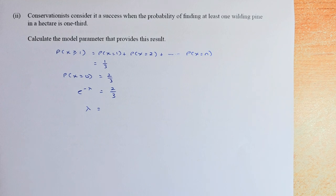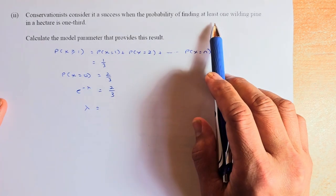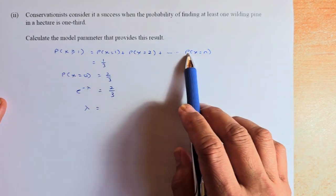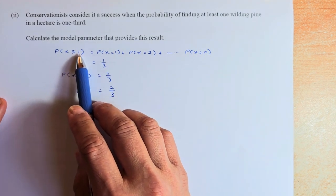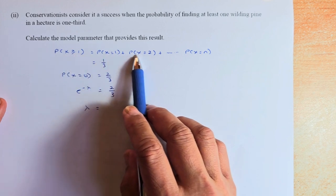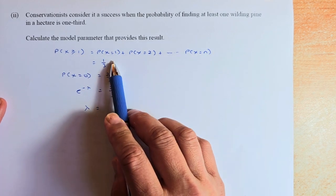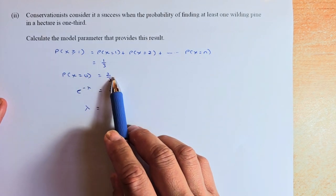Conservationists consider it a success when the probability of finding at least one wilding pine in a hectare is one-third. Calculate the modal parameter that provides this result. So if it is more than 1, at least 1 means 1, 2, 3, 4, 5. That is equal to one-third. So probability x is greater or equal to 1. If 1, 2, 3, 4 to n is one-third, then probability of x equal to 0 is two-thirds. Because 1 minus one-third is two-thirds.